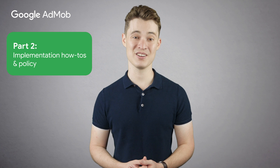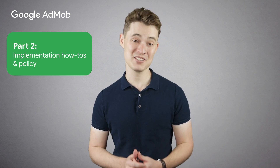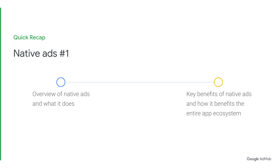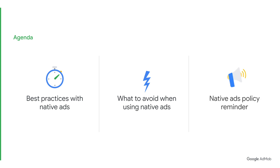Welcome back to another Google AdMob tutorial. Today we'll be covering the second part of our Native Advanced series, focusing on native ad implementations and important policy reminders. In the first of our two-part series, we looked at what native ads are and why they're useful. In this video, we'll review some best practices, discuss what to avoid when using native ads, and conclude with some native ad policy reminders to ensure you remain compliant without any interruptions to your ads.